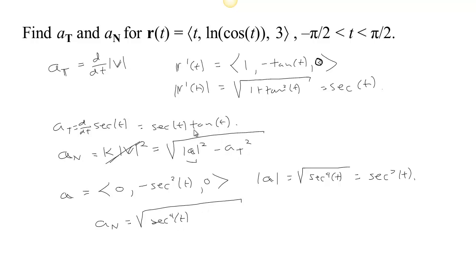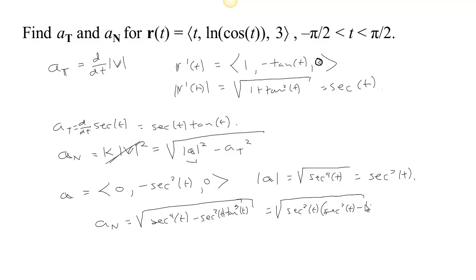We subtract a_T squared: we already found a_T is sec t tan t, so we subtract sec² t tan² t. Factoring out a sec² t, we have the square root of sec² t times (sec² t minus tan² t). By the Pythagorean identity, 1 plus tan² t equals sec² t, so sec² t minus tan² t equals 1.